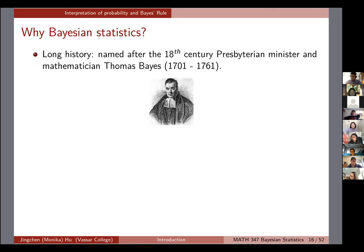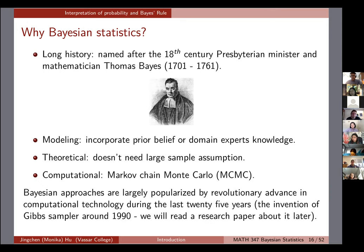Bayesian statistics is named after the 18th-century mathematician Thomas Bayes. There are three general building blocks: modeling, where we incorporate prior beliefs or domain expert knowledge; theoretical aspects, where no large-sample assumption is needed — even flipping a coin three times and getting all failures still allows inference about the success probability; and computation. When you do have a large sample, Bayesian and frequentist approaches generally arrive at similar answers under certain conditions.